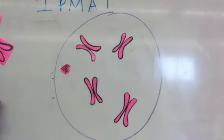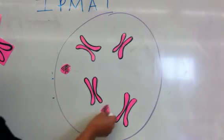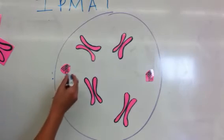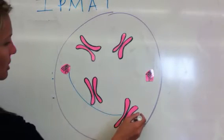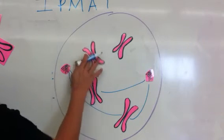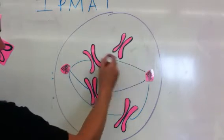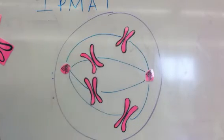Centrioles, remember, centrioles make spindle fibers. Centrioles double and move to the opposite sides. And here these chromosomes are going to attach to the spindle fibers. And these blue lines are your spindle fibers. So that's all prophase.